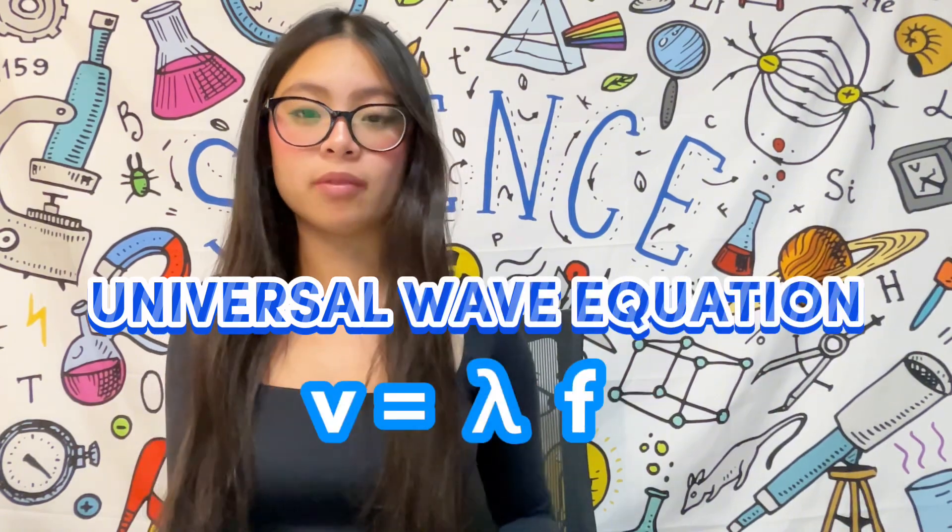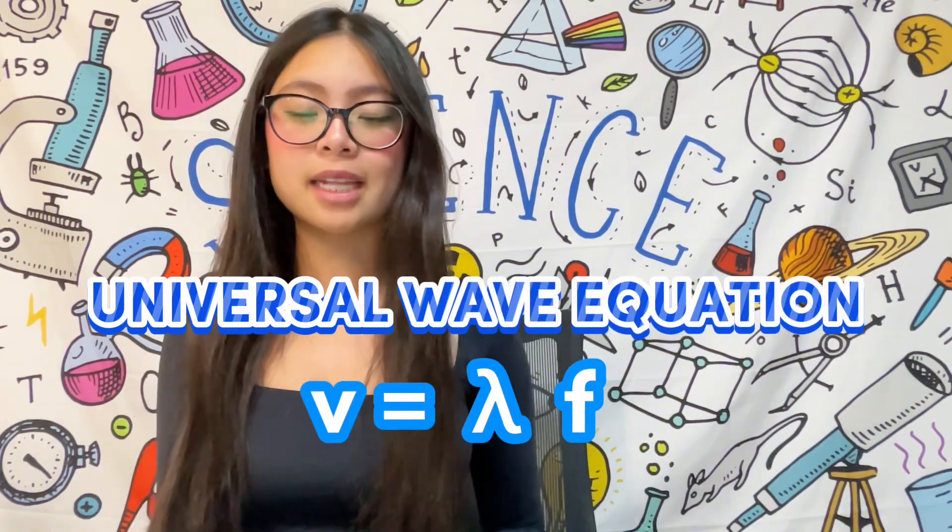So if we know the frequency of a wave, meaning we know how many full wavelengths are completed within a second, and we also know the wavelength of the wave, we can calculate the speed. This is known as a universal wave equation and can be represented by the following variables. V equals lambda F,